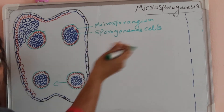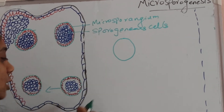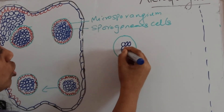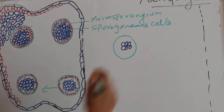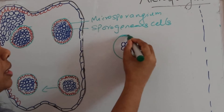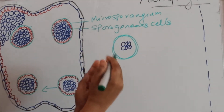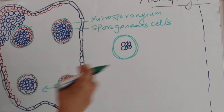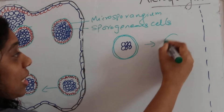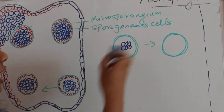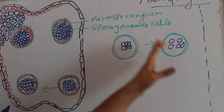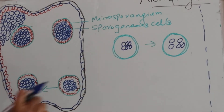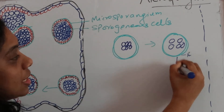For your understanding, I am drawing it separately here. This is the microsporangium and the cells which are tightly or compactly arranged are called the sporogenous cells. At the earlier stages, the anther is tight — cells are tightly arranged. At a later stage, when the anther matures, this microsporangium becomes bigger in size and the sporogenous cells become loosely arranged. Now we can call this structure as the pollen sac.